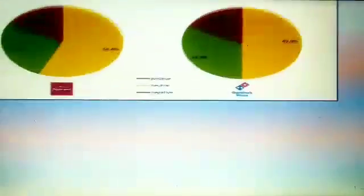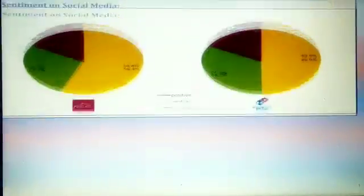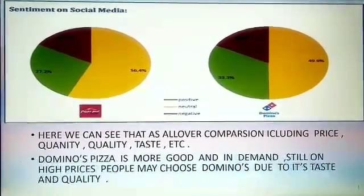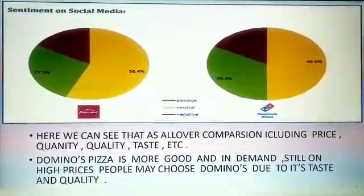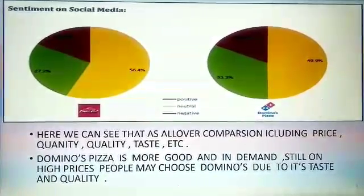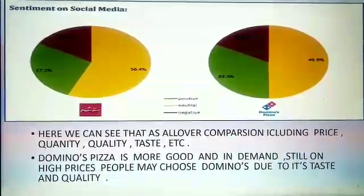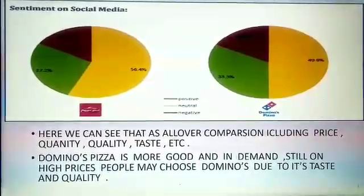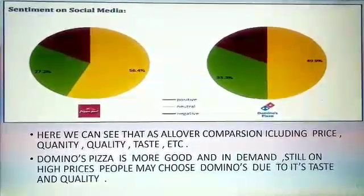From this pie chart, we can conclude that Domino's is in demand but also at high prices. Because Domino's is more popular and in demand, people still choose Domino's even at high prices due to its taste, quantity, and trust. Because it is also a brand, people sometimes choose a brand rather than searching for substitutes. Sometimes from a product, we have a fixed expectation, fixed taste, and fixed trust.